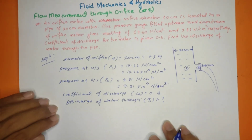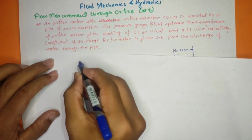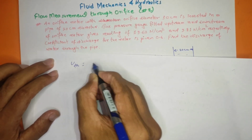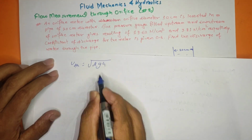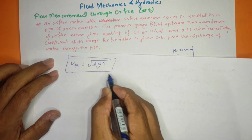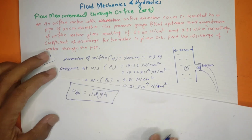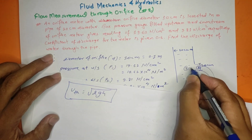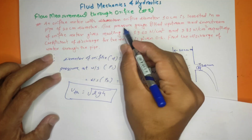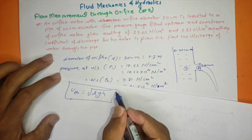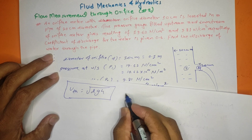Now we have to find the theoretical velocity. The theoretical velocity is given by the formula: root of 2g times the pressure head difference between upstream and downstream.